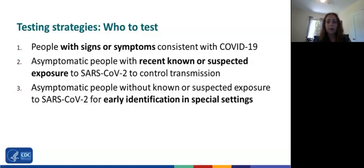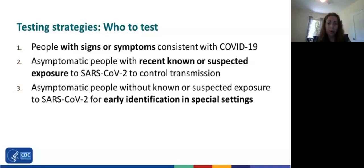The purpose and process of all testing should be clearly communicated to clients and staff to promote understanding and acceptability. Testing strategies should protect privacy and confidentiality consistent with applicable laws. Any time a positive test result is identified, it's critical to ensure the individual is rapidly notified, separated from others, provided appropriate medical care, and linked to appropriate alternative housing for isolation. Importantly, CDC does not recommend entry testing for homeless service sites, and shelters should not exclude people who test positive without a plan for where they can safely access services.